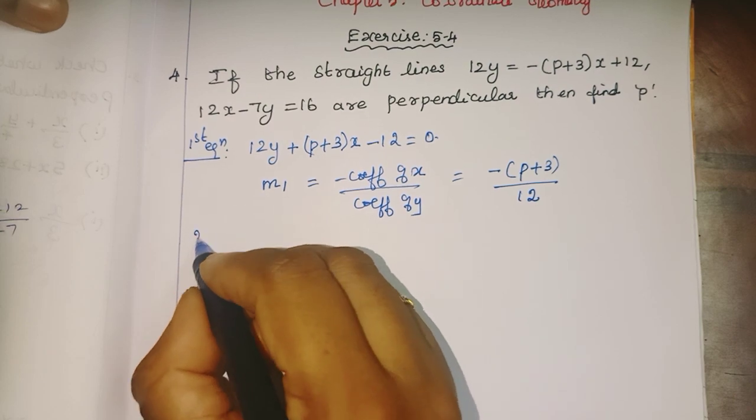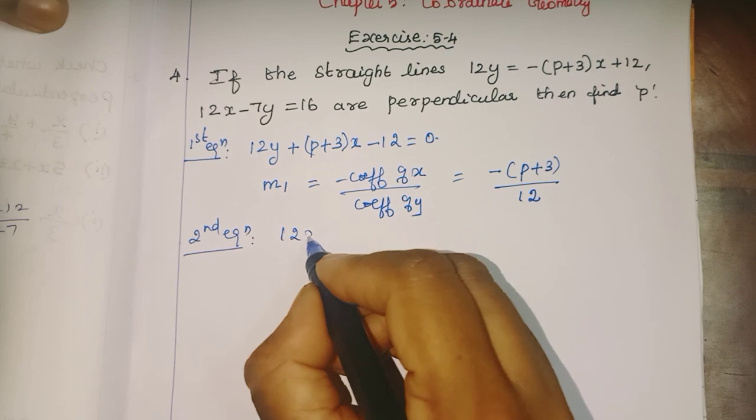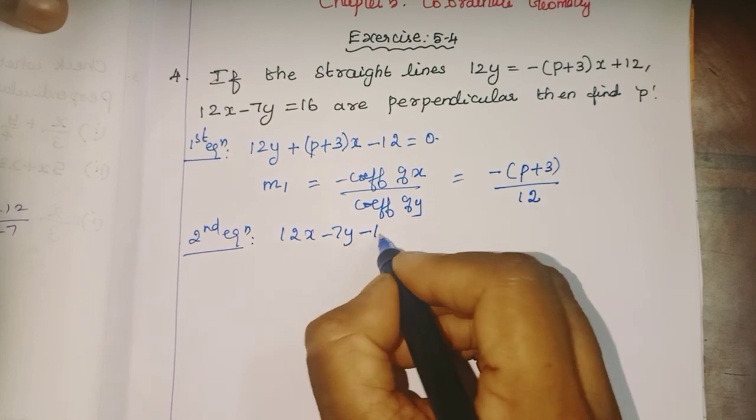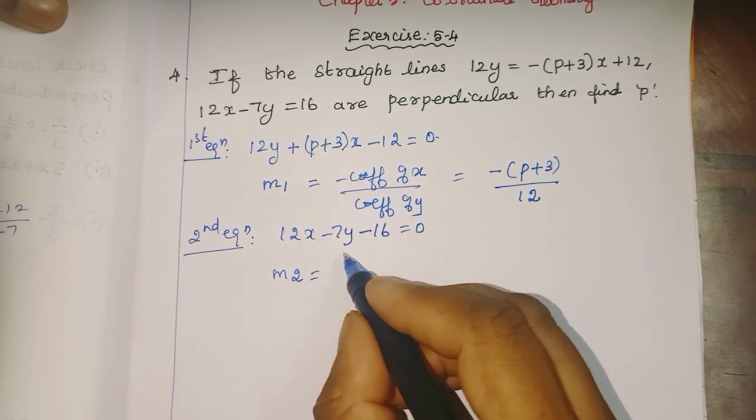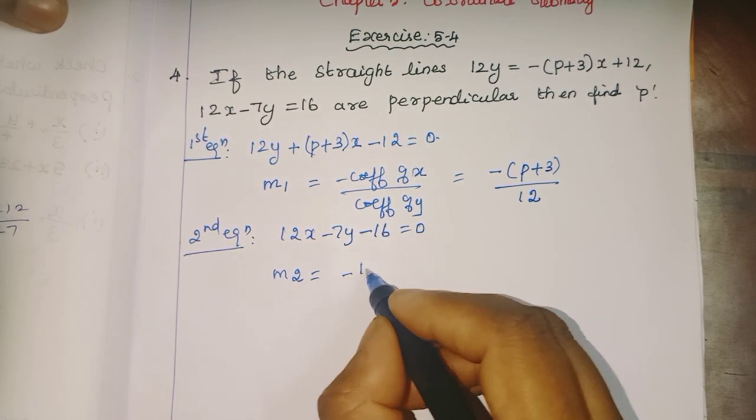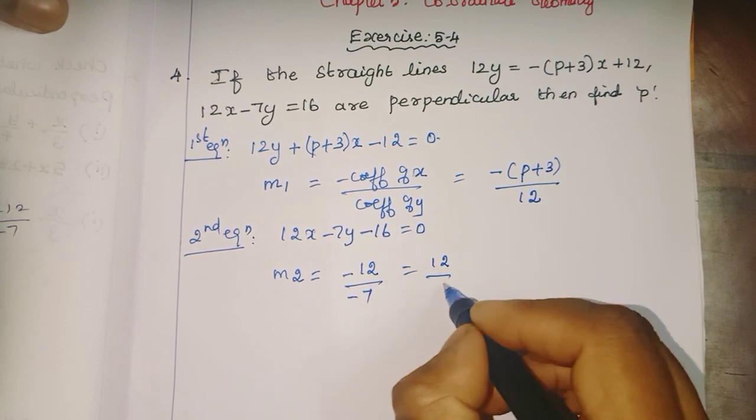Second equation: 12x - 7y - 16 = 0. So m2 = -coefficient of x / coefficient of y = -12/-7 = 12/7.